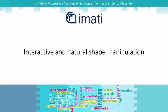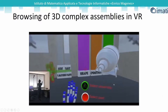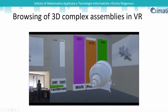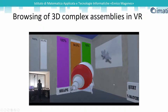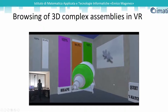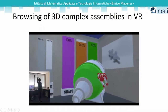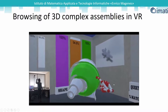Another important aspect treated by IMATI is the definition of methods and tools for easy and natural interaction with shapes. The inspection and manipulation of 3D models is made easier thanks to natural interaction methods such as gaze, voice commands and dynamic gestures, allowing users to easily see correspondences between assemblies, disassemble and reassemble 3D models.